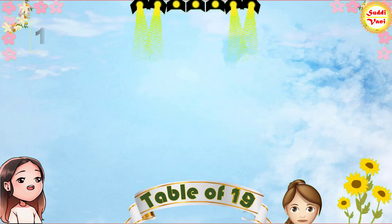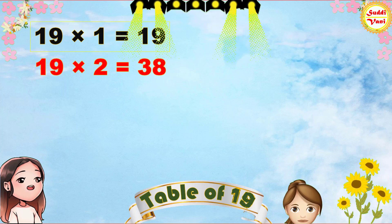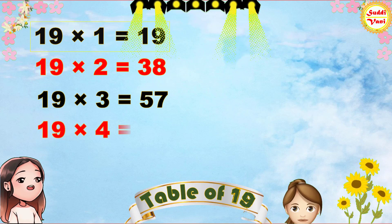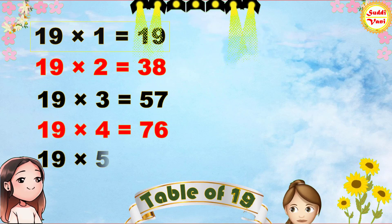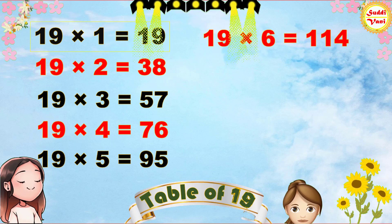Once again: 19 × 1 = 19, 19 × 2 = 38, 19 × 3 = 57, 19 × 4 = 76, 19 × 5 = 95, 19 × 6 = 114.